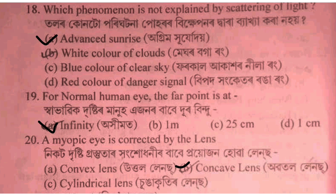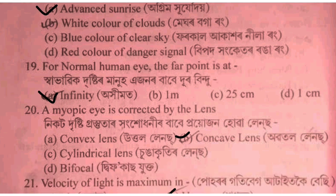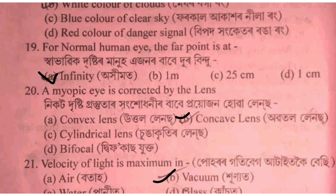For a short-sighted person, the risk equals the power of a concave lens. The option is concave lens with a lens arrow for correction.